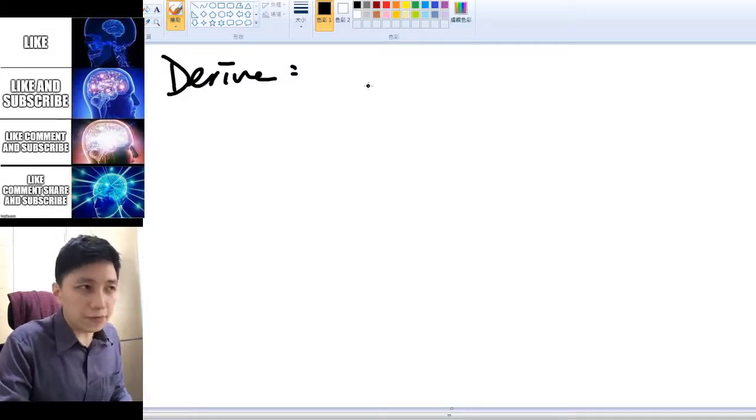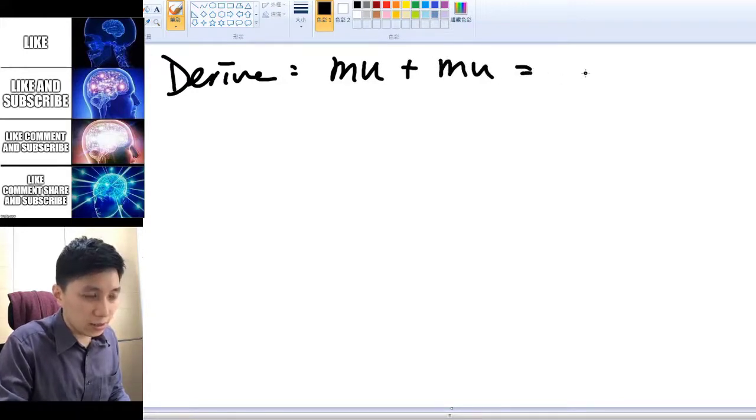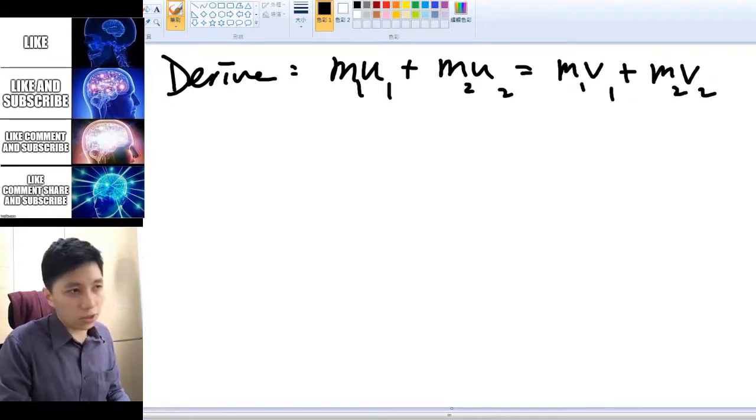Hi, welcome back. So in this video we will be deriving the equation about conservation of momentum. So the equation, again, you may want to put it down first. That is this one: m₁u₁ + m₂u₂ = m₁v₁ + m₂v₂.